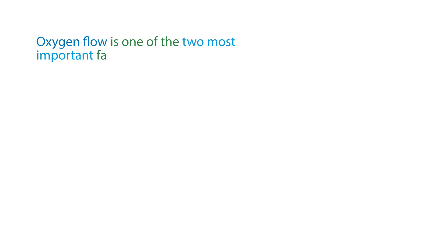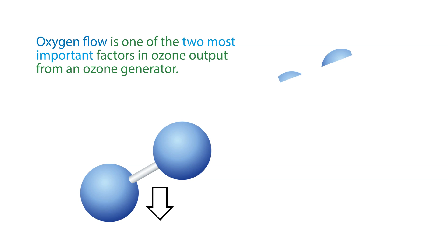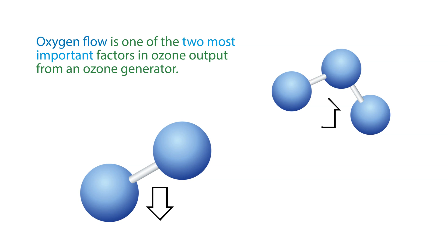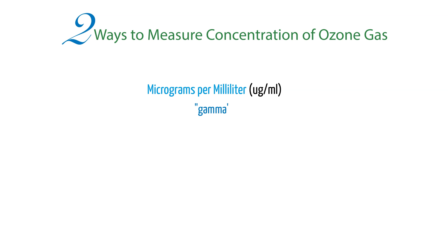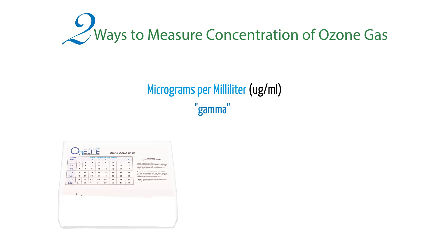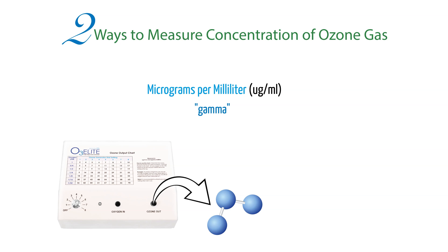Oxygen flow is one of the two most important factors in ozone output from an ozone generator. In general, the lower the oxygen flow, the higher the ozone output. In this video, we'll show you how ozone is measured and why in some cases you might want to choose a higher oxygen flow rate. There are two different ways to measure the concentration of ozone gas. The first and most common method is micrograms per milliliter, also known as gamma. This unit of measurement tells us the exact concentration as it exits the ozone machine.